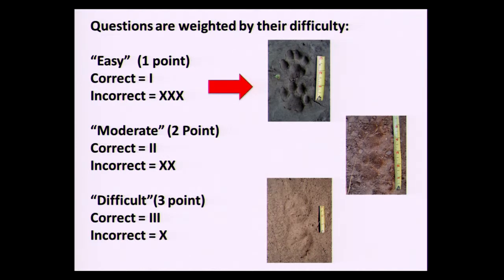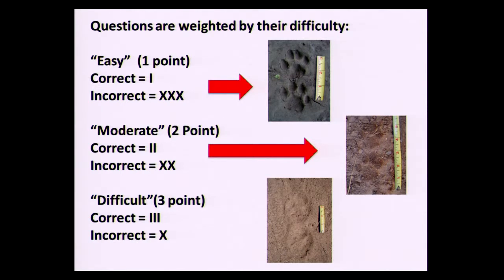For a moderate question, the bobcat track is not as sharp and clear but still identifiable. However, it can be confused with other species because it's not as clear — so that's a two-point question. The track in the loose sand would be a difficult three-point question. If you got that correct, you get three points on your score; if incorrect, it's just one point off. That difficult track would probably have associated tracks with it, because by itself it's incredibly challenging. A gait pattern would normally be associated with it to help.